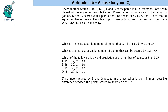So we have teams A, B, C, D, E, F, G. How many matches will a team play? We have seven teams, so each team will play six matches times two because each team played twice. So each team will have 12 matches.